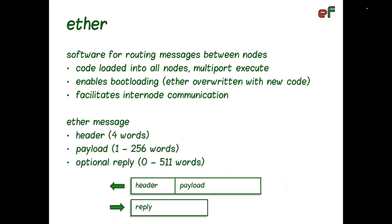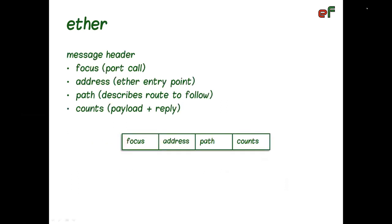Communication over Ether is achieved by sending messages. They are composed of header, payload, and optional reply that is sent back using the same route. Message header is always four words long. It is composed of a focus, which is a call instruction to the port from which the message comes, address that points to an Ether entry point, path that describes which nodes transfer the message, and counts that define length of payload and reply.